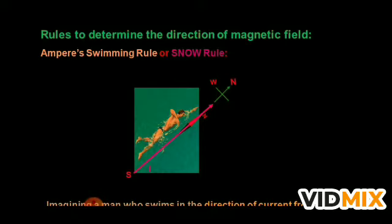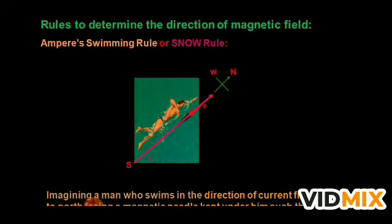When the current is flowing from South to North, the North pole of the magnetic field will deflect towards West. And you can reverse it: when the current flows from North to South, the North pole of the magnetic field will deflect towards East. This SNOW rule helps you find the direction of the magnetic field whenever there is a current in the wire and the compass needle is kept under the wire. This is also called Ampere's Swimming Rule.